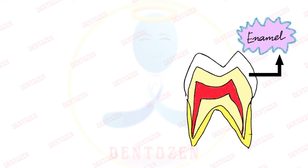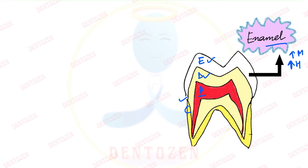Today's video is about the hard tissues of the tooth. The tooth has three hard tissues: enamel, dentin, and cementum, plus one soft tissue which is the pulp. Out of the three hard tissues, enamel has the highest mineral content and is the hardest, but it is also brittle, meaning it can fracture easily under masticatory forces.